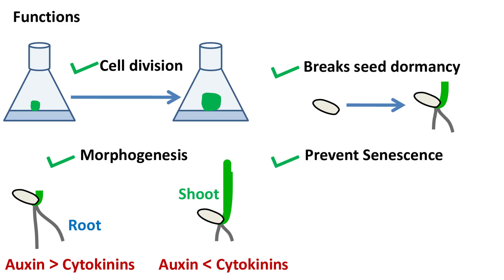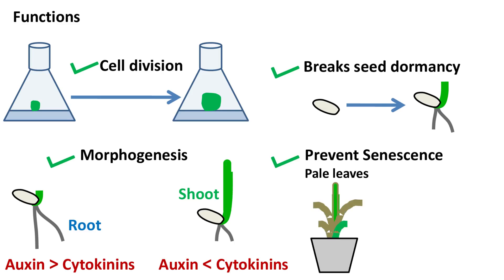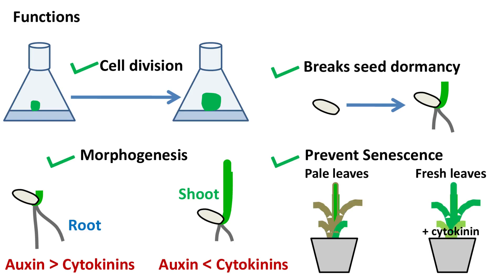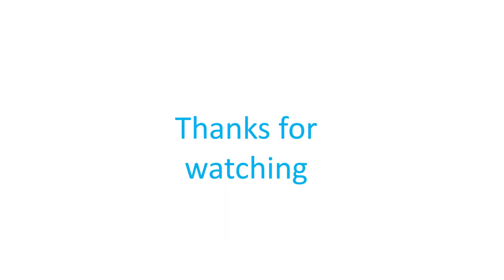They prevent senescence. Senescence is a phenomenon in which the leaves become pale and yellow due to loss of chlorophyll. In the presence of cytokinine, the process of senescence is delayed and leaves remain green for a longer period of time.